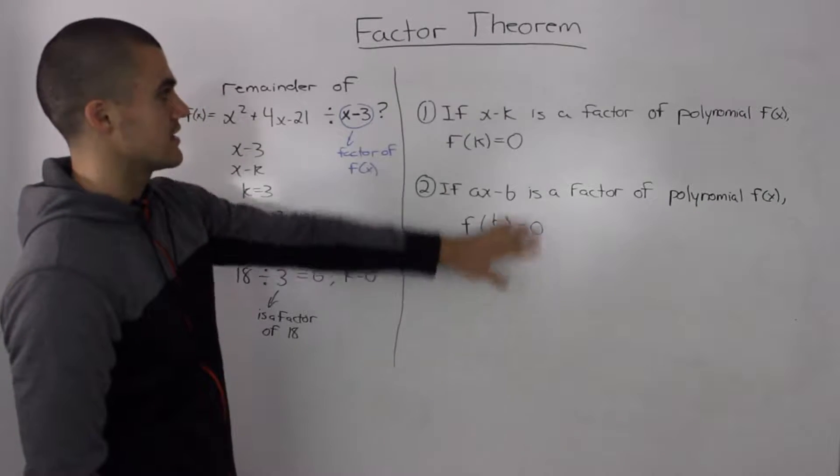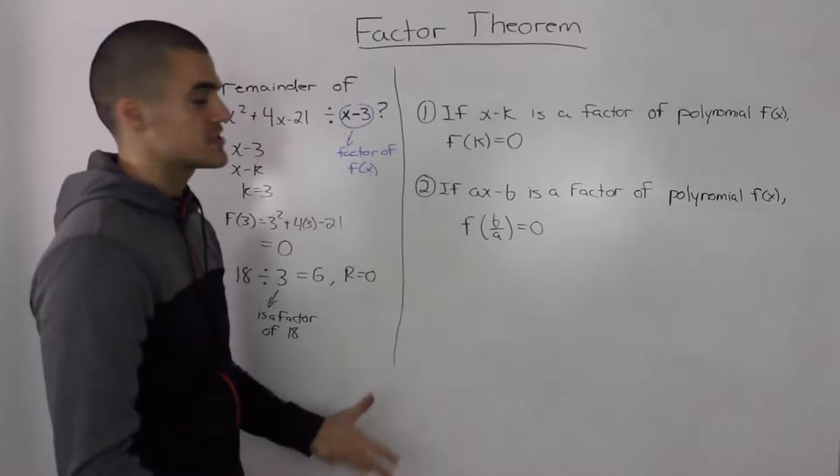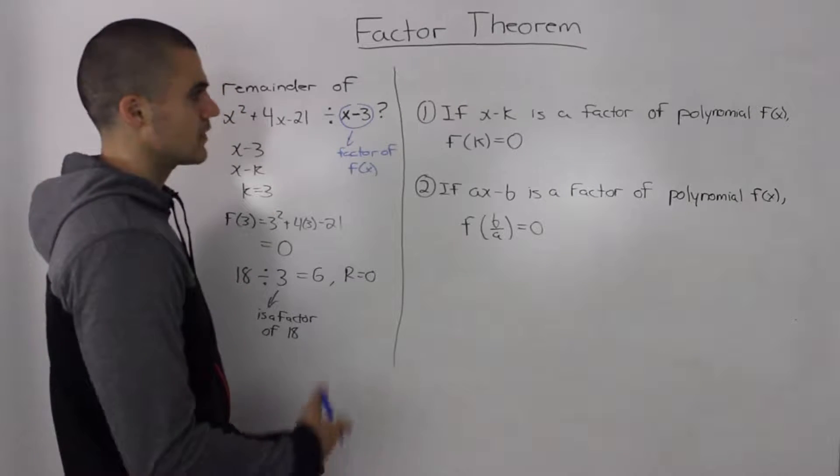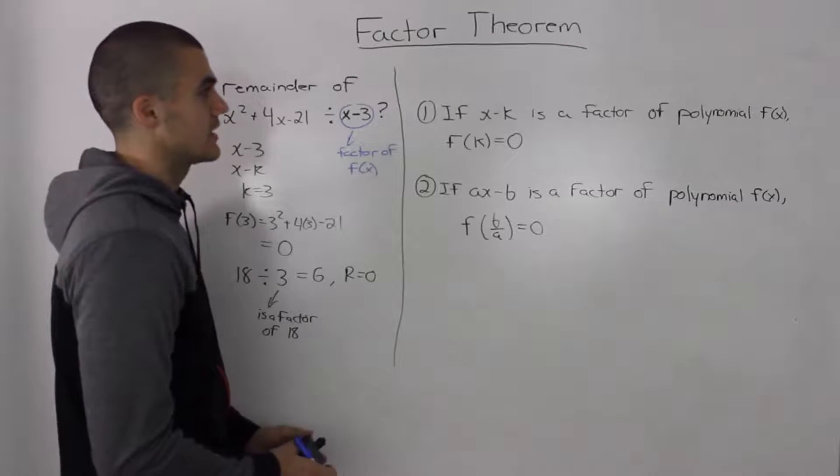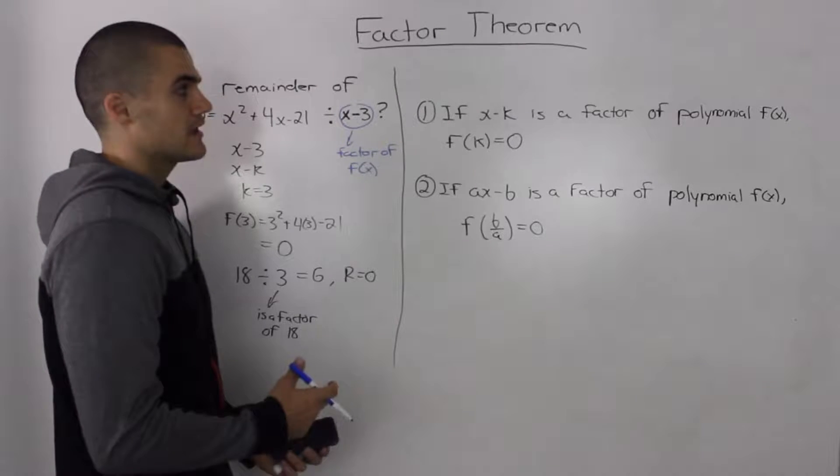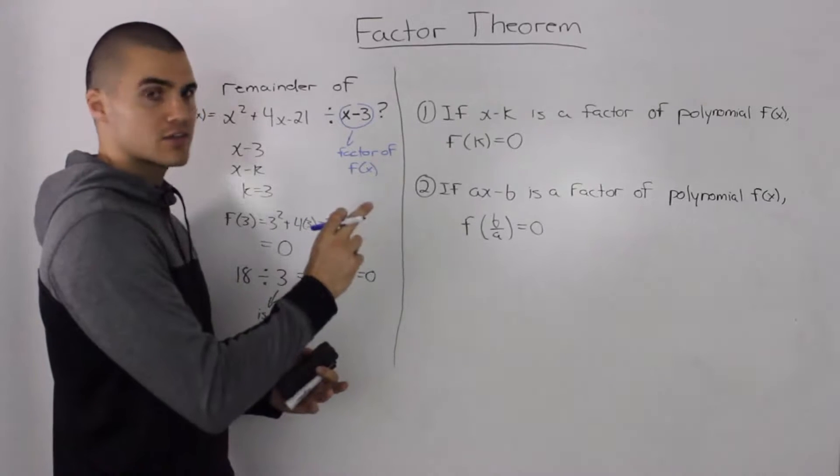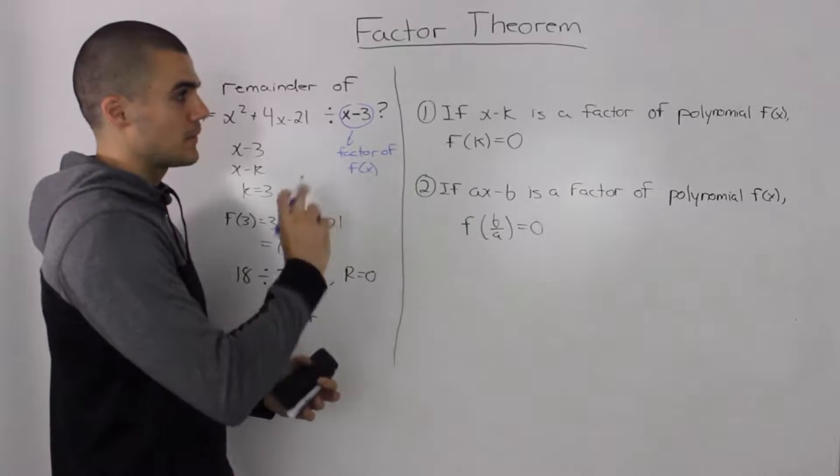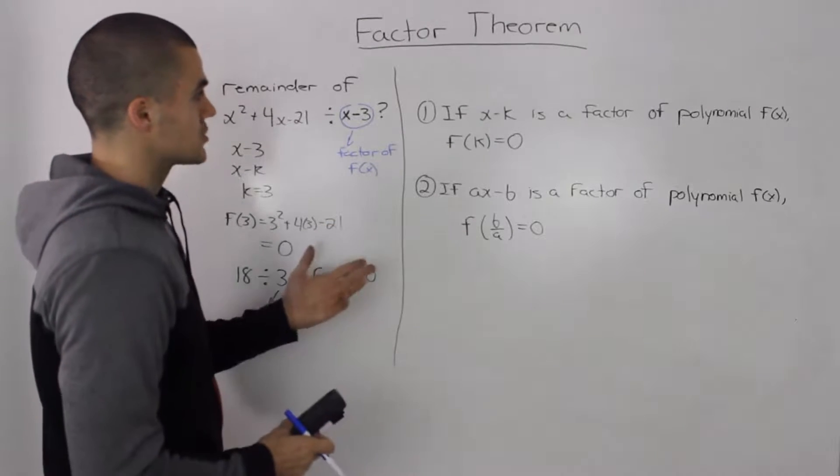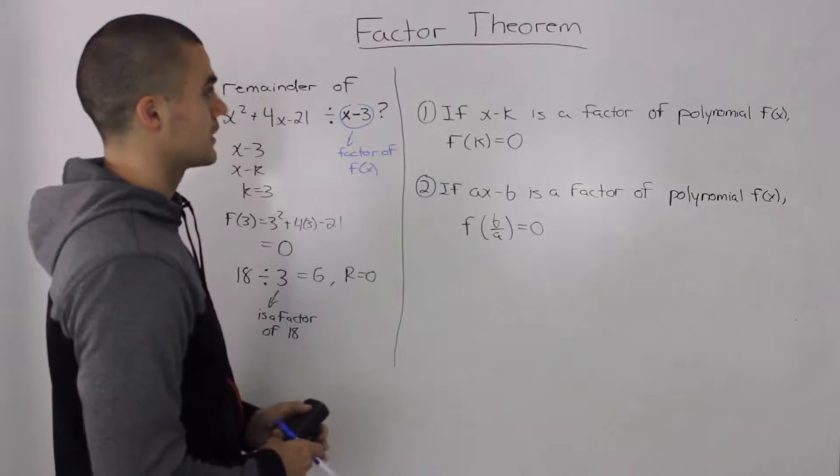This is the factor theorem. It's actually very similar to the remainder theorem. Basically, it's saying that if you have a divisor that's a factor, when you divide the dividend by that divisor, the remainder is going to be 0. More specifically, there are two cases you could run into.